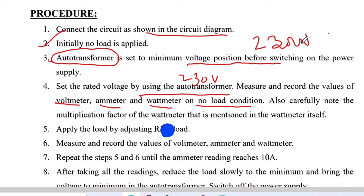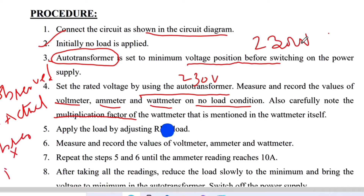For making a wattmeter calculation you definitely have to be aware of the multiplication factor of the wattmeter, and you have to mention everything in a tabular column. For wattmeter readings you need two readings: one observed reading as it is from the wattmeter, and the second is the actual reading — actual reading equals observed reading multiplied by multiplication factor. The multiplication factor is given by the manufacturer, so we use that same multiplication factor with the observed reading to calculate the actual wattmeter reading.